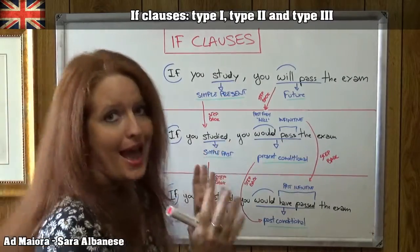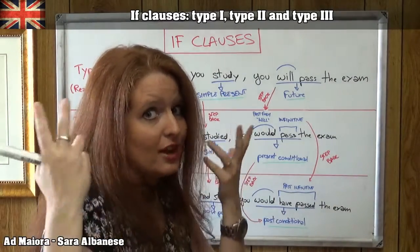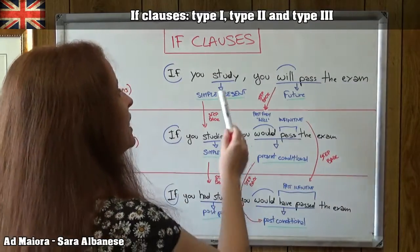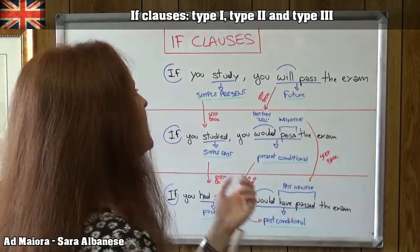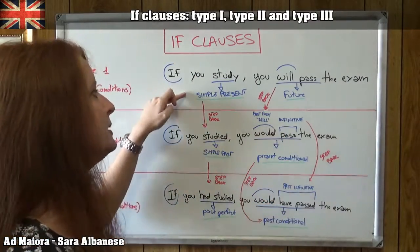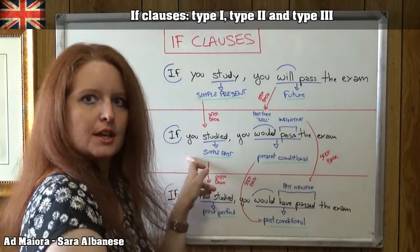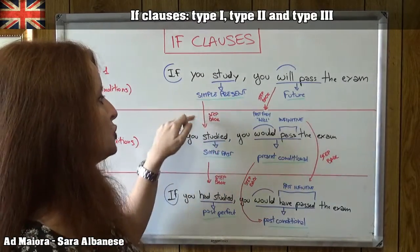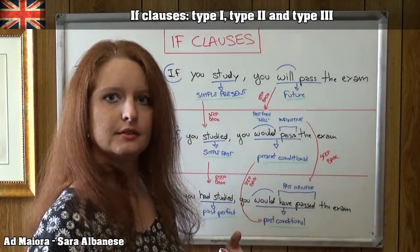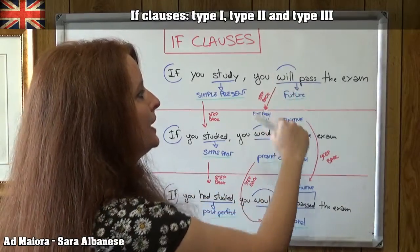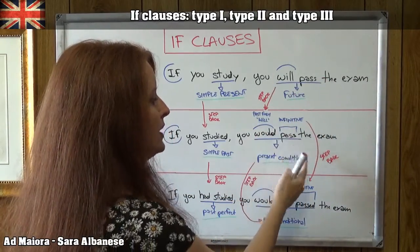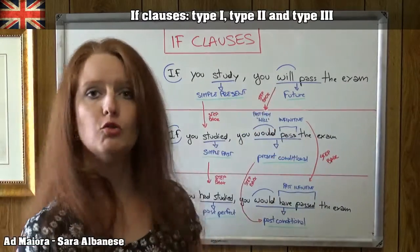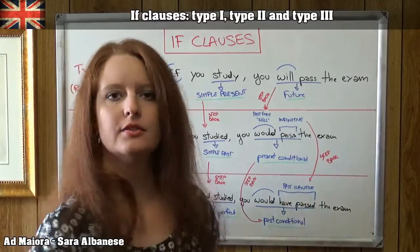For Type 2 we have to say: 'If you studied, you would pass the exam.' Each one of our tenses takes a step back. The simple present becomes a simple past — from present to past, one level back. The same goes for the main clause: 'will pass,' which is a future, becomes 'would pass,' which is a present conditional. The present conditional is formed with WOULD — the past form of WILL — plus the infinitive.